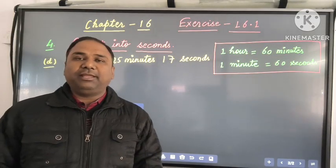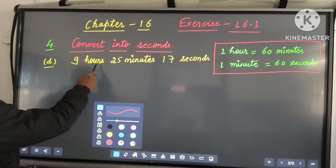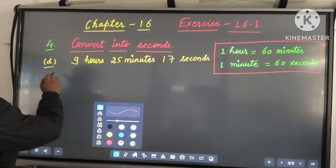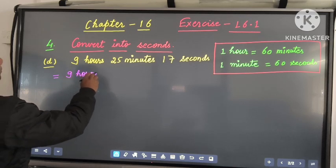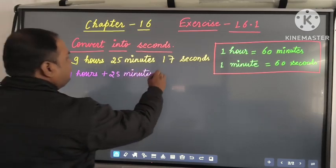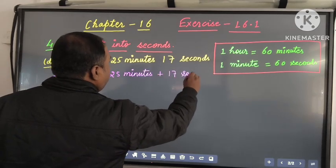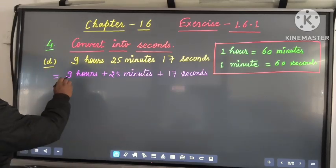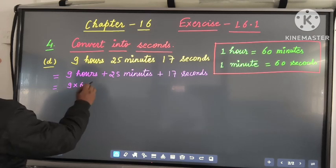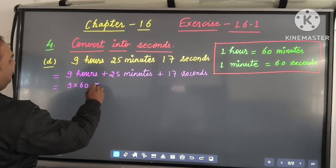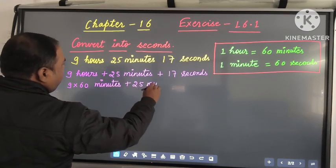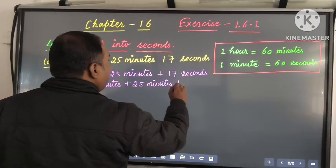Now we will understand Question number 4d. 4d is 9 hours, 25 minutes, 17 seconds — and the same question: convert into seconds. So first we will separate it: 9 hours plus 35 minutes plus 17 seconds. Then we will convert hours into minutes. 1 hour is equal to 60 minutes, so 9 hours is equal to 9 times 60 minutes, plus 35 minutes, plus 17 seconds.